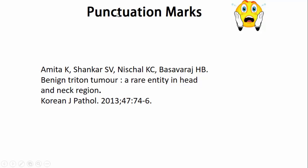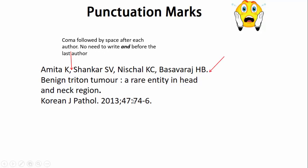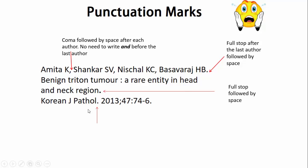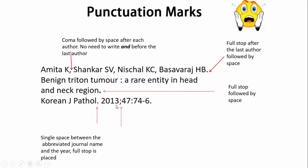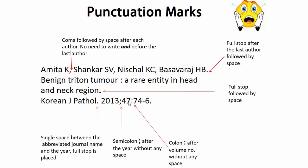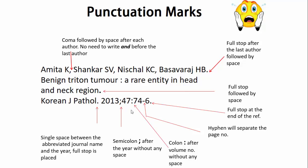Coming to the punctuation marks: a comma is written after each author, followed by a single space. No need to write 'and' before the last author. Full stop after the last author, followed by a single space. Again, full stop after the abbreviated journal name, followed by a single space. Year of publication followed by semicolon. Volume followed by colon. Page numbers separated by a hyphen, and then followed by a full stop at the end of the reference.